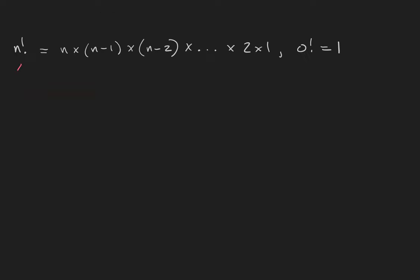n factorial, written as n with an exclamation point, is defined to be the product of any positive integer n with all of the integers between it and 1, including 1. So n factorial equals n times n minus 1 times n minus 2, and so on, times 2 times 1. Furthermore, we define 0 factorial to be equal to 1.